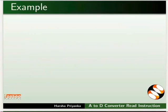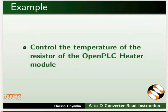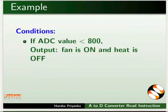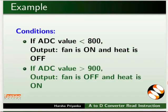We will learn about the working of this instruction using a simple analog example. In this tutorial, we will control the temperature of the resistor, that is, the heating element of the Open PLC Heater Module. If the ADC value is less than 800, turn on the fan and turn off the heating element. If the ADC value is greater than 900, turn off the fan and turn on the heating element. You can set the limit values according to your requirements. Recall that the temperature sensor used in the heater module is a NTC thermistor. Thus, the resistance of the thermistor is inversely proportional to the temperature.